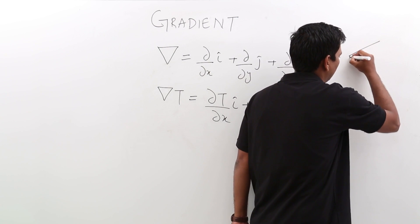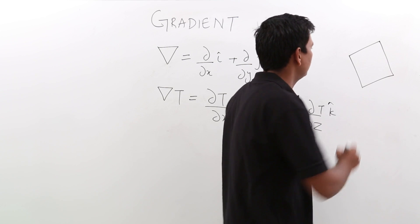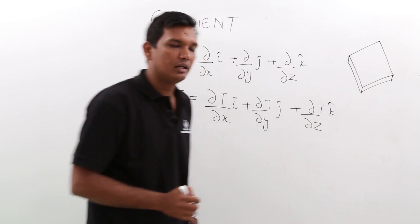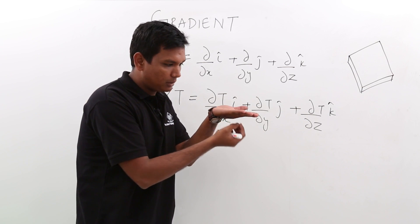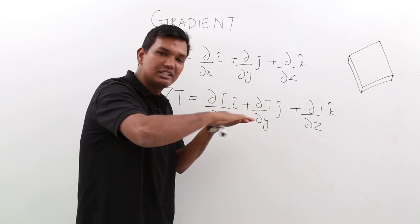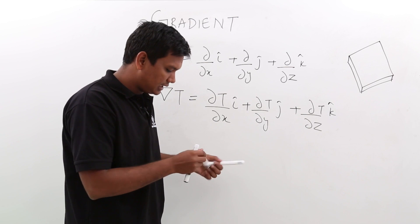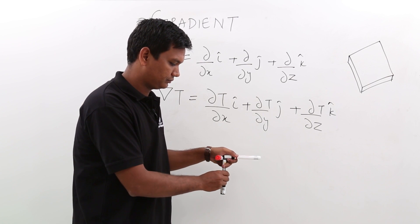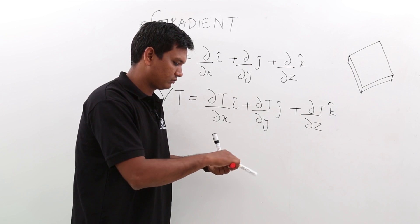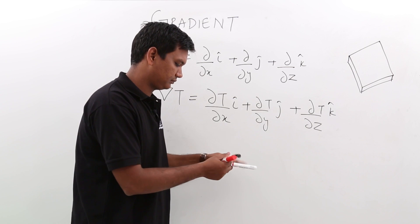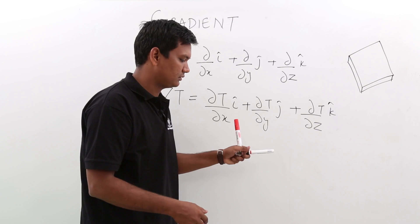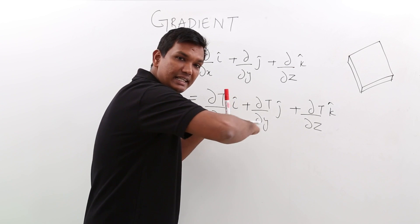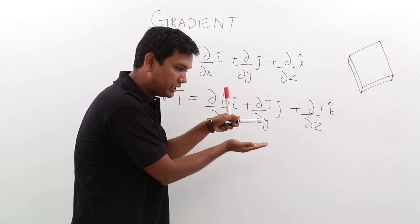Let me take a dosa plate as an example. As you would know, street shopkeepers heat a dosa plate from below to cook. This is roughly what the plate looks like. As they heat it from the bottom, every point on the surface will have the same temperature.